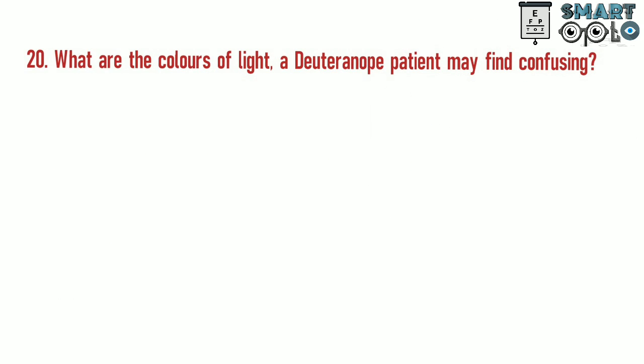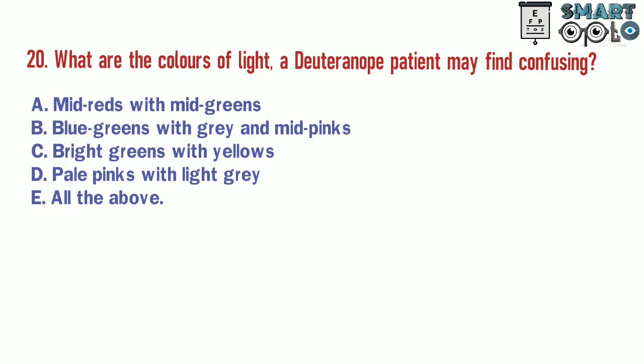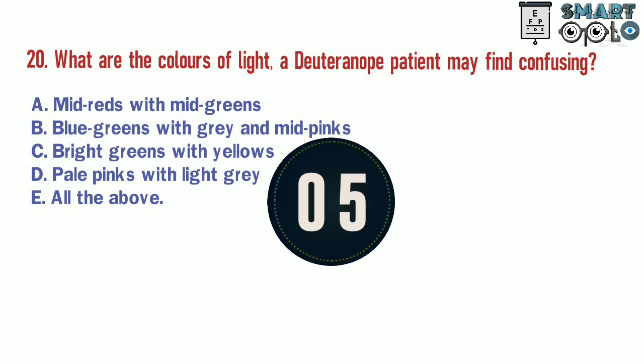Question 20. What are the colors of light a deuteranope patient may find confusing? A. Mid-reds with mid-greens. B. Blue-greens with grey and mid-pinks. C. Bright greens with yellows. D. Pale pinks with light grey. E. All of the above.